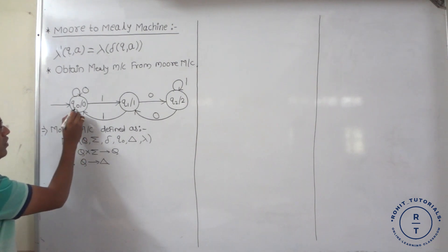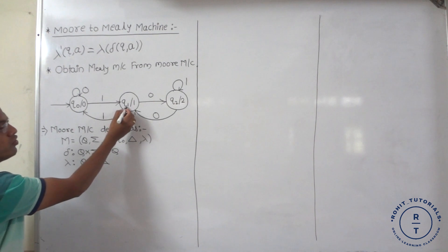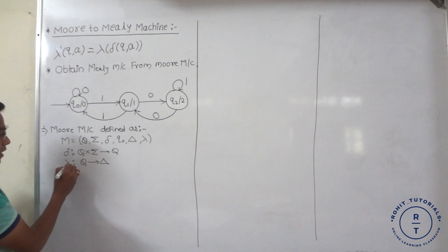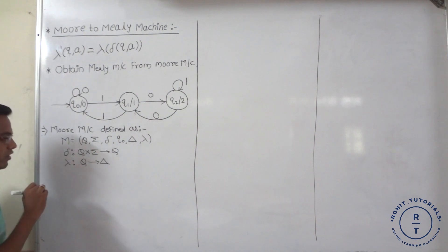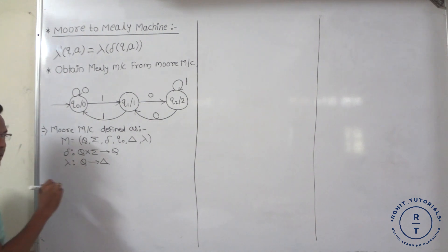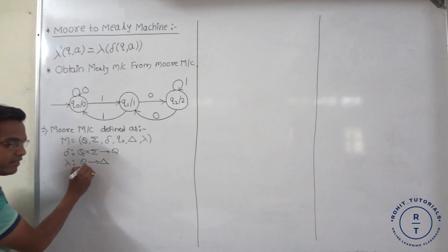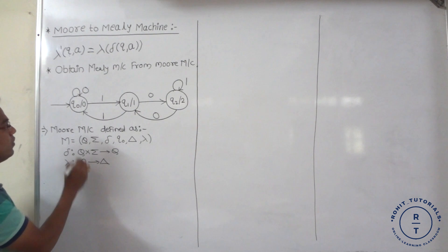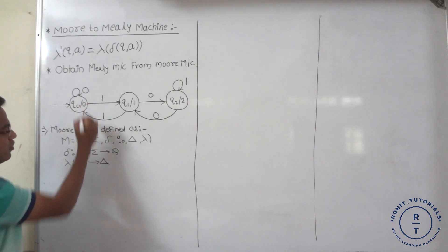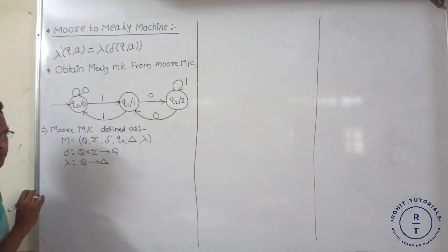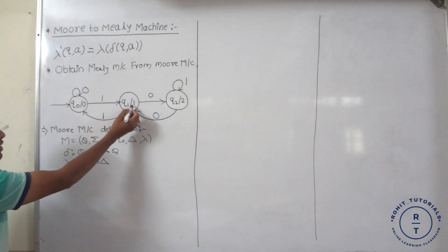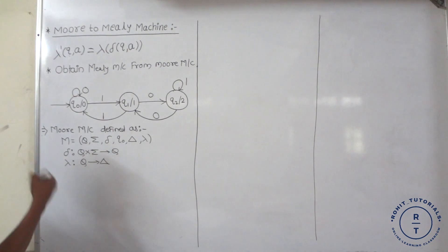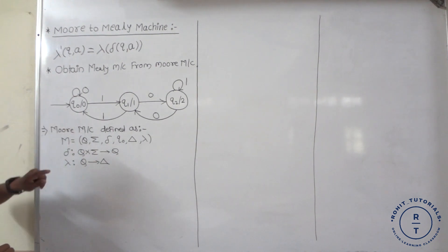For example, at q0 state, when input 1 occurs, it goes to q1 — that is the next state. Lambda is the machine function or output function. It is represented as: for each state, an output symbol is given. Suppose if we consider q0, the output symbol is 0. If we consider q1, output symbol is 1. If we consider q2, output symbol is 2. With the help of this diagram, we formulate the transition function.